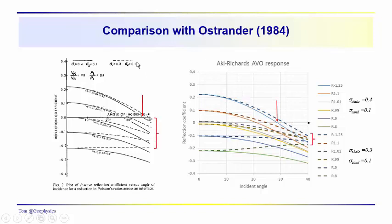We see obvious differences between the Aki-Richards response and the responses presented by Ostrander. These dashed line responses for Poisson's ratio 0.3 in the shale and 0.1 in the sand are converging much more for the Aki-Richards response than they do in the Ostrander paper.